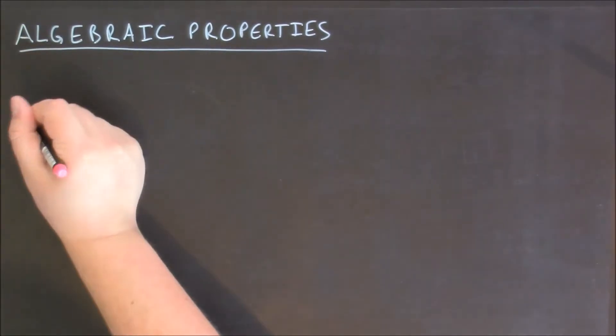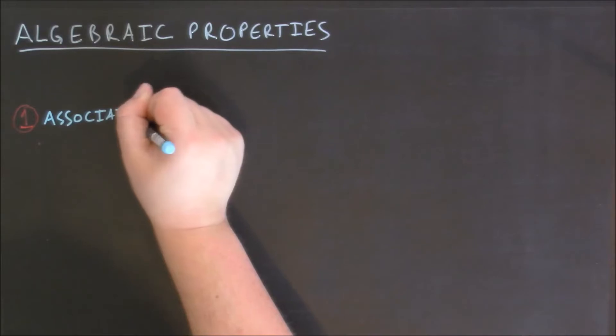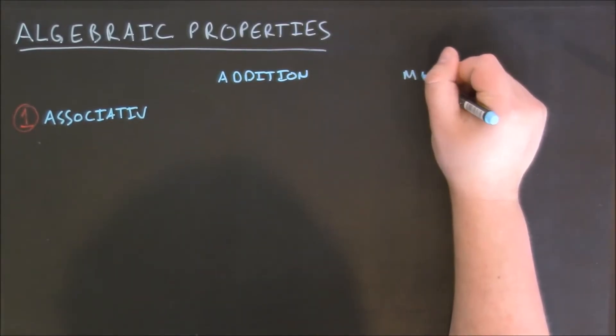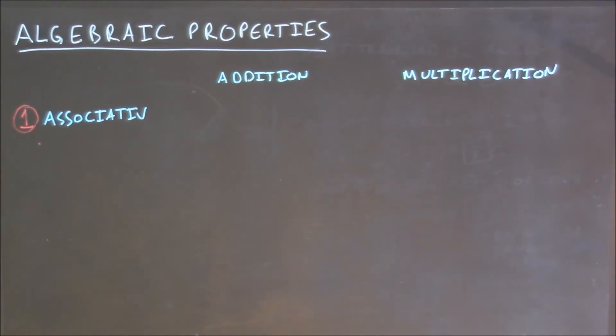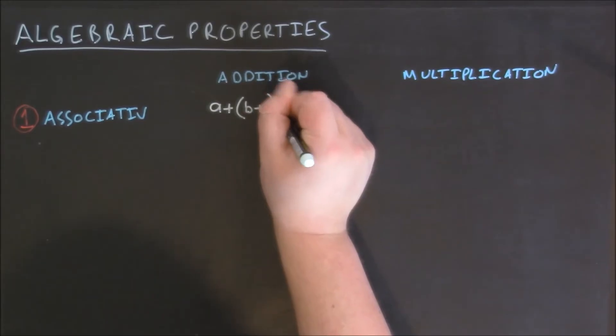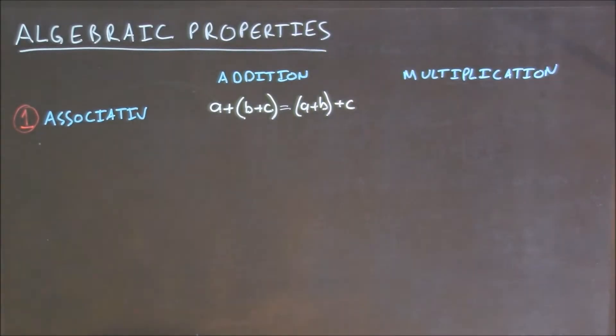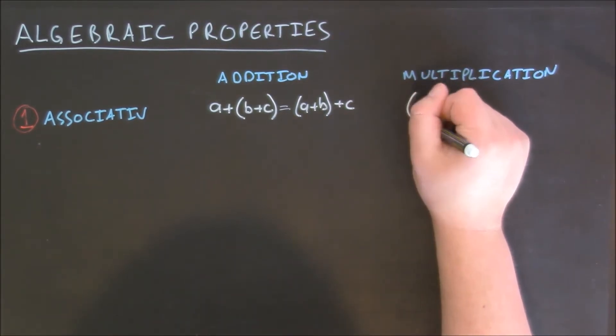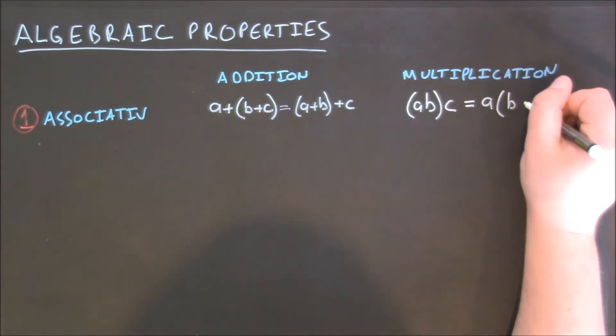The first algebraic property is known as the associative property and it has a part for both addition and multiplication. For addition, the associative property states that if I have a added to the quantity of b plus c, I can rewrite this as the quantity a plus b plus c. The associative property for multiplication states that if I have the quantity of a times b multiplied by c, I can rewrite this as a times the quantity of b times c.